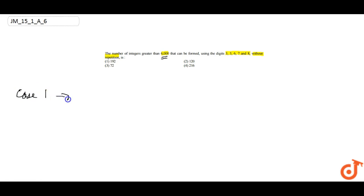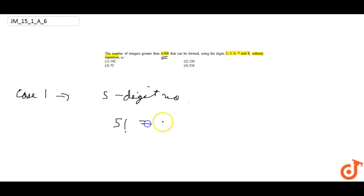We are given five digits, so any five-digit number formed is going to be greater than 6000. Case 1: five-digit numbers. The count of five-digit numbers will be 5 factorial, which equals 120. All of these five-digit numbers are greater than 6000.